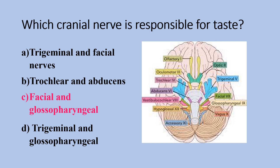The facial nerve, cranial nerve seven, provides fibers to the anterior two-thirds of the tongue. The glossopharyngeal nerve, cranial nerve nine, provides fibers to the posterior third of the tongue. The last one is the vagus nerve, cranial nerve ten, which controls phonation and swallowing.